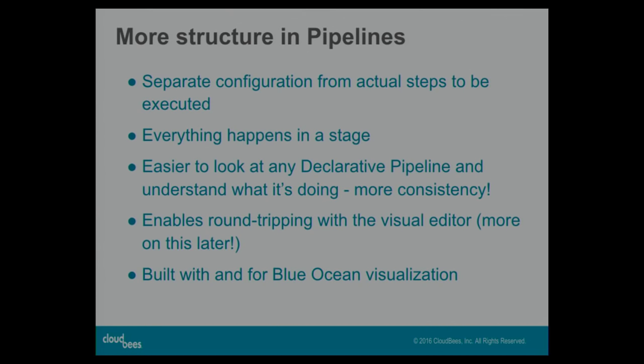The structure also enables round-tripping with the visual editor, which has a beta coming out on Monday. The whole thing has been built with and for Blue Ocean visualization. Blue Ocean has markings for stages that are skipped due to a failure in an earlier stage, and for stages that are skipped because you've conditionally decided not to execute them. So we've got a predictable execution model and better visualization of that execution model.